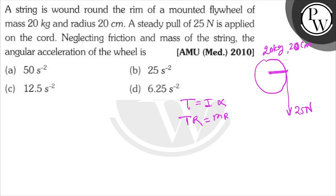and I equals MR squared. So T is 25, R is 1 by 5 m because it is 20 cm, so we can write it as 1 by 5 m.